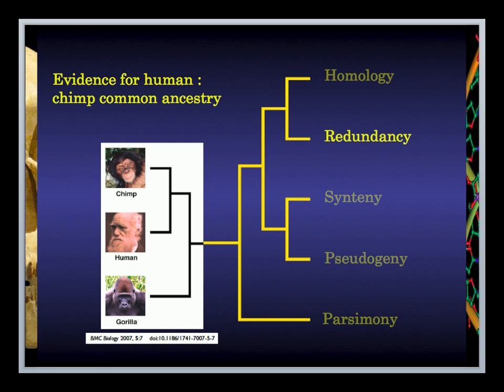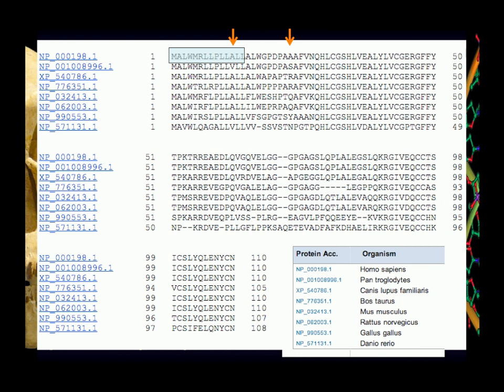Now, that's one argument. The common counter-argument to this line of evidence is to say: insulin's got to be insulin. If you're going to be a mammal and have insulin, it needs to have this sequence of amino acids. There's a constraint on function — the thing has to do its job, so those amino acids have to be in that order. The rebuttal to that is that different organisms get by with insulin just fine with slightly different combinations. But you could say: if you're going to be a primate and have insulin, it's going to have to be at least pretty similar to this in order to work. This is where the argument from redundancy comes in, and now we're going to look not just at the amino acid sequence, but at the underlying DNA code beneath that amino acid sequence.